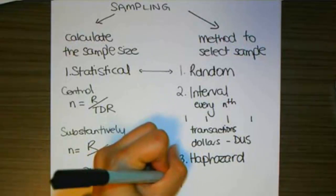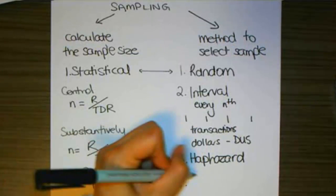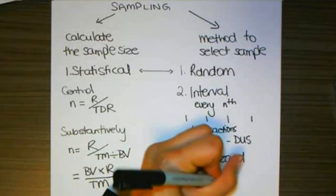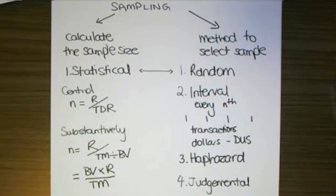Our next option, judgmental. Now judgmental means selecting particular transactions. Now in textbooks, judgmental is typically frowned upon, but judgmental sampling can come in handy.